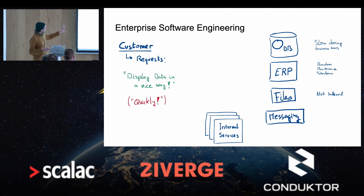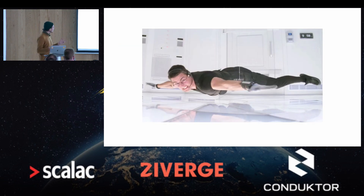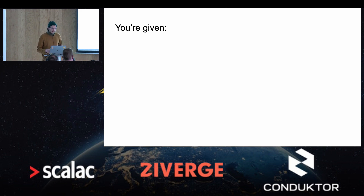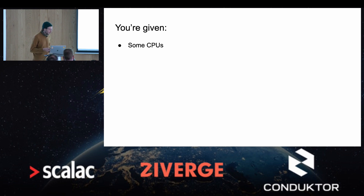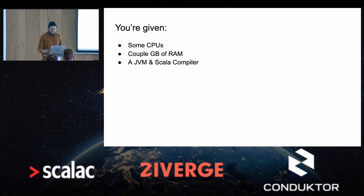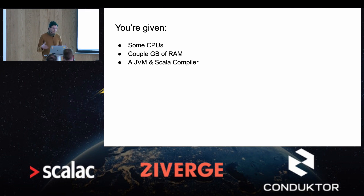So anyway, your job — your mission, if you want to accept it, or if you want to keep your job — is that you will be given a few CPUs. Maybe they're virtual, maybe they're real ones, you're on premise, wherever. You have a few CPUs, you have a couple gigs of RAM. We're writing Scala, so you have a Scala compiler, a JVM. Maybe you have multiple nodes of these, but that's basically what you're starting with.